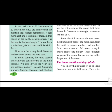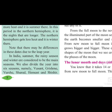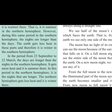We can divide a year into these three seasons and then divide each season into two parts, giving us six seasons. Those six seasons in Marathi are: Vasanth, Grishma, Varsha, Sharath, Hemant, and Shishir.